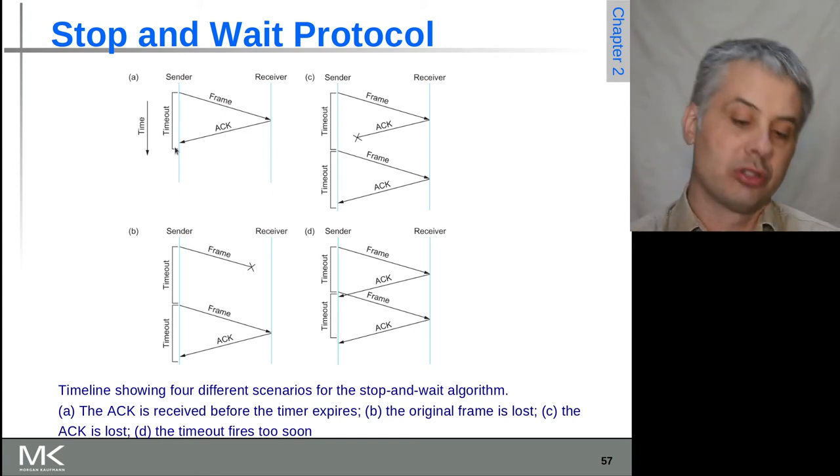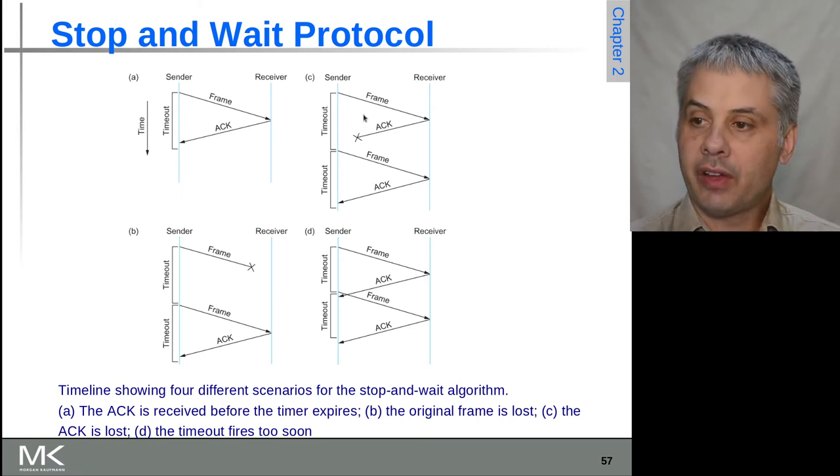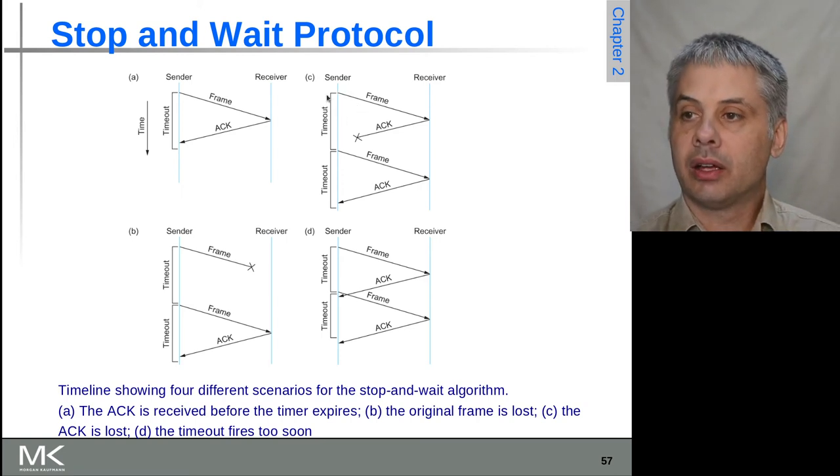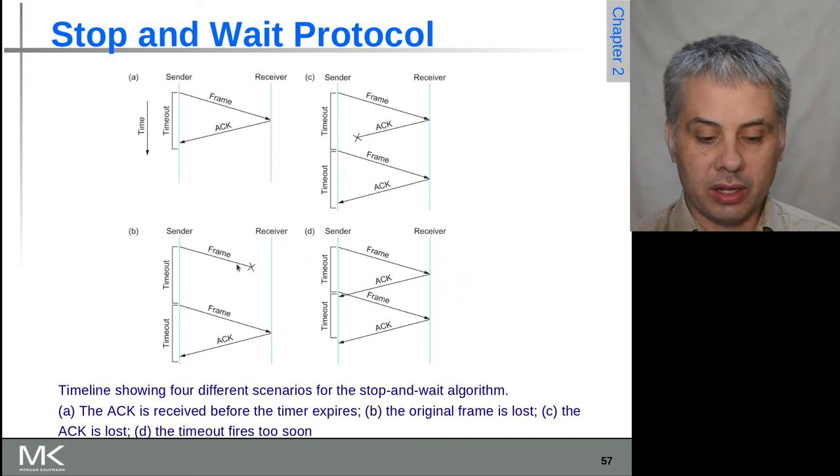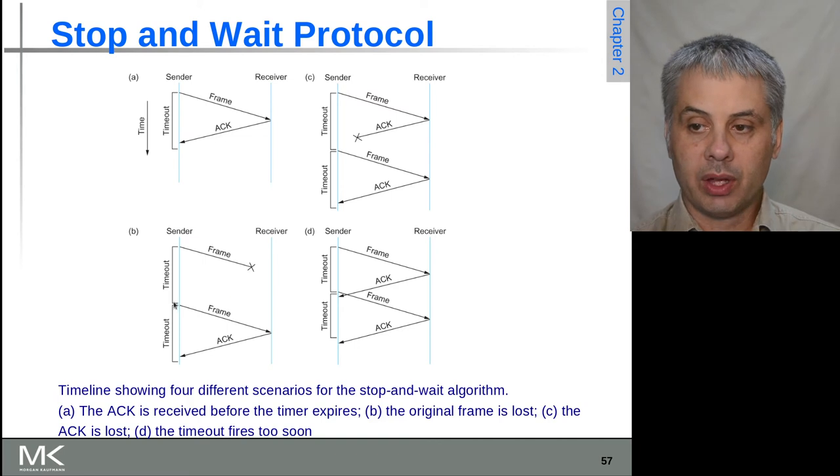In case A, everything is good. We send a frame and got the acknowledgement within time. In case B, we send the frame but it has an error and never arrives. As a result, we don't get an acknowledgement within the timeout, then we can resend the frame. This time it does get through and the acknowledgement comes through.